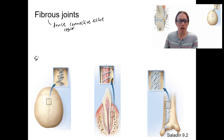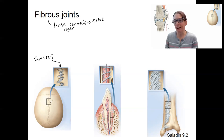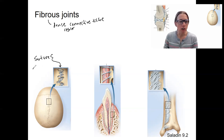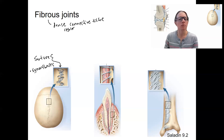The first type are sutures. These are fibrous connections between the bones of the skull, where you actually have separate bones — for example, the frontal bone versus the temporal and parietal bones. There are different bones that make up your skull connected by these sutures, and they are very strong. These are synarthroses — they are immobile.